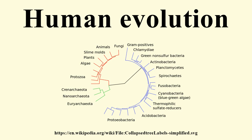Linnaeus and other scientists of his time also considered the great apes to be the closest relatives of humans based on morphological and anatomical similarities. The possibility of linking humans with earlier apes by descent became clear only after 1859 with the publication of Charles Darwin's On the Origin of Species, in which he argued for the idea of the evolution of new species from earlier ones. Darwin's book did not address the question of human evolution, saying only that light will be thrown on the origin of man and his history.